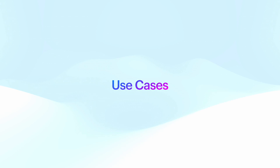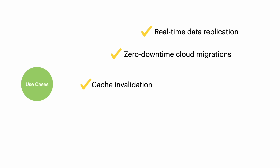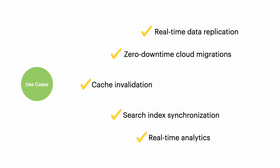Debezium has a wide range of use cases in both operational and analytics domains. It's a popular option for real-time data replication and data migration among different database systems, and it does that without disrupting existing systems in place. It's also a good choice for building event-driven applications, such as cache invalidation and search index synchronization. Additionally, Debezium is a great way of feeding real-time data into real-time analytics systems.